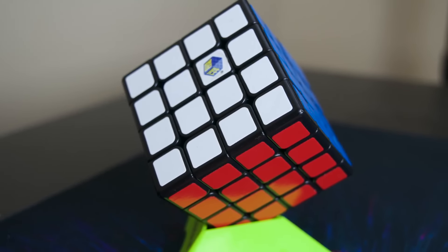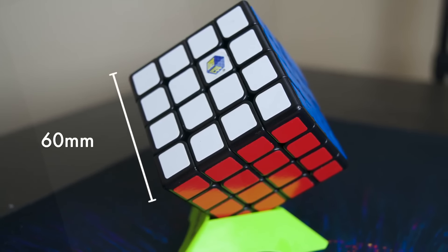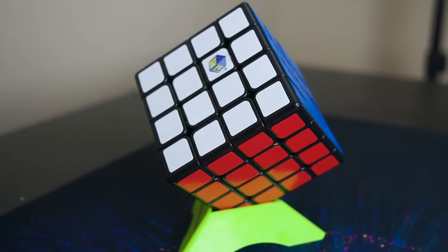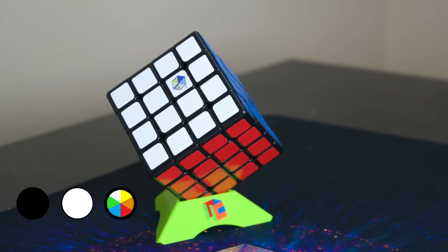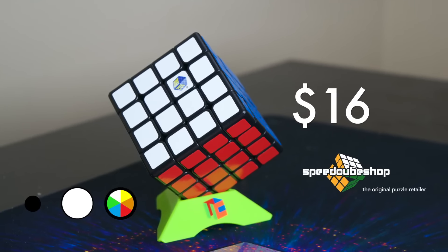This new cube out of Uxen comes with the standard Moyu shades and is a 60 millimeter cube, which is pretty standard for 4x4s nowadays. You can get it in black, white, or stickerless for the price of 16 US dollars at speedcubeshop.com.